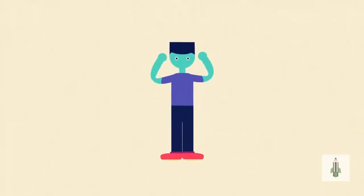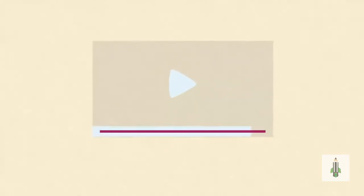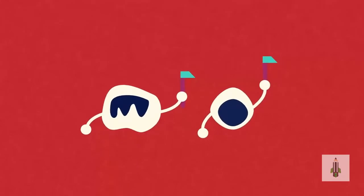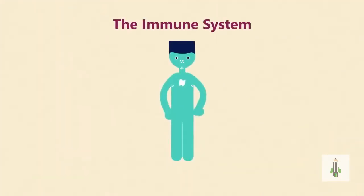Our body has a first line of defense, which we saw in the video on human defense system against pathogens. But when this fails, our white blood cells kick into action. White blood cells are the cells of our immune system.